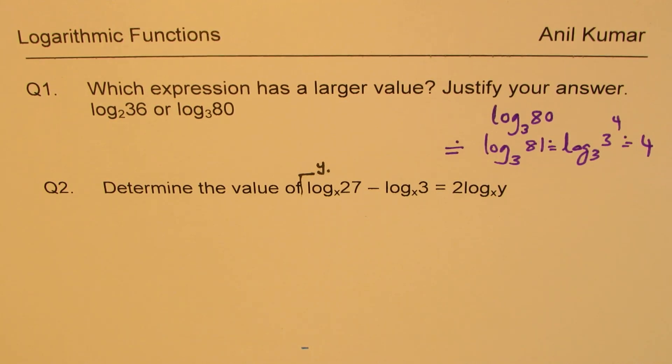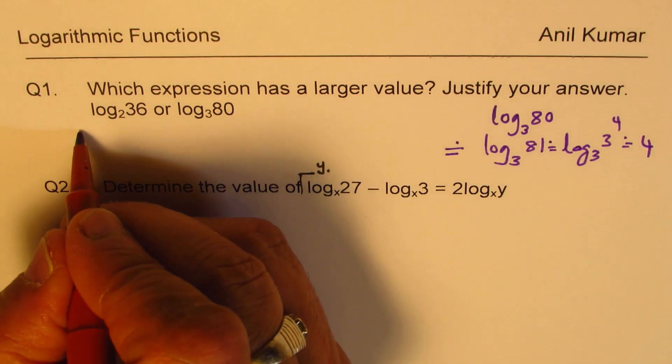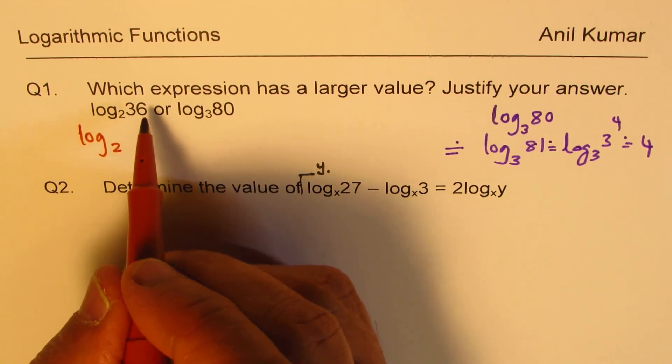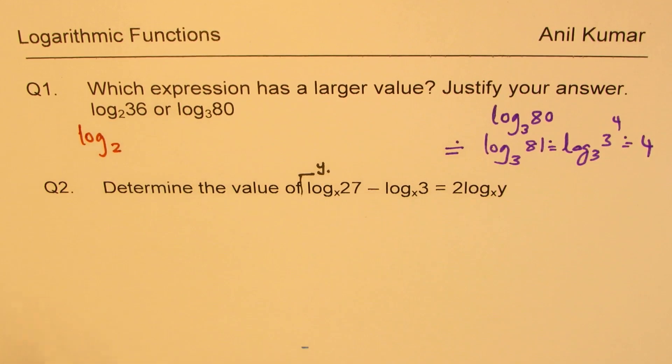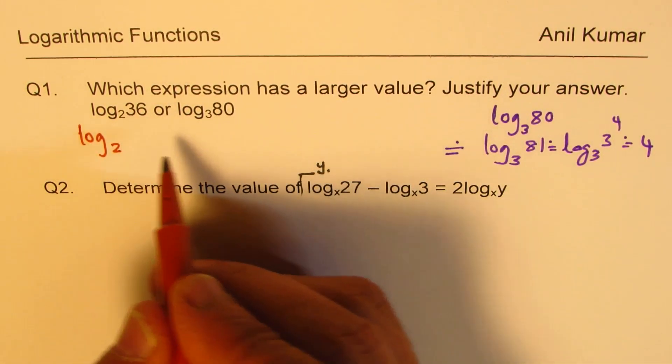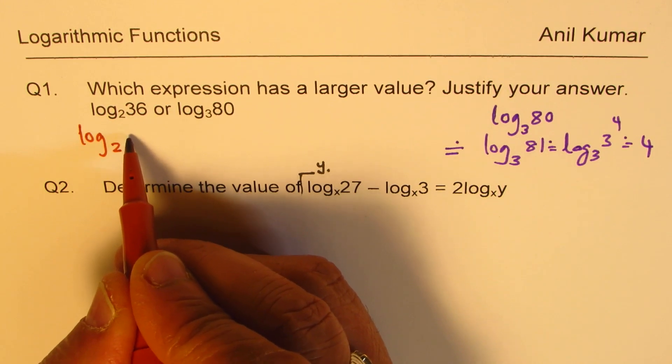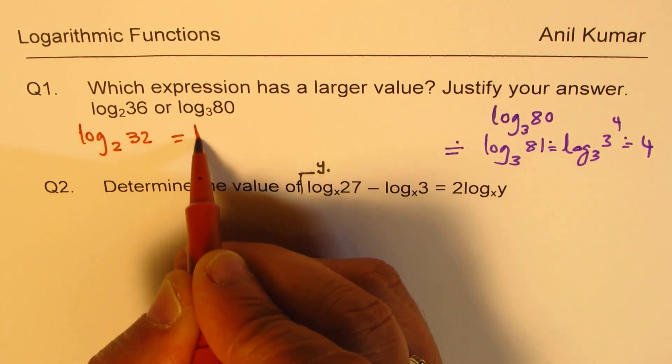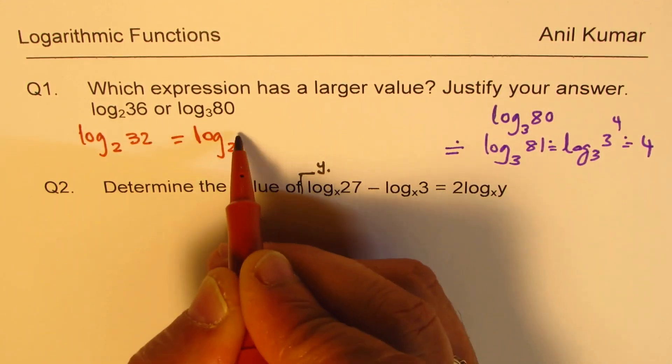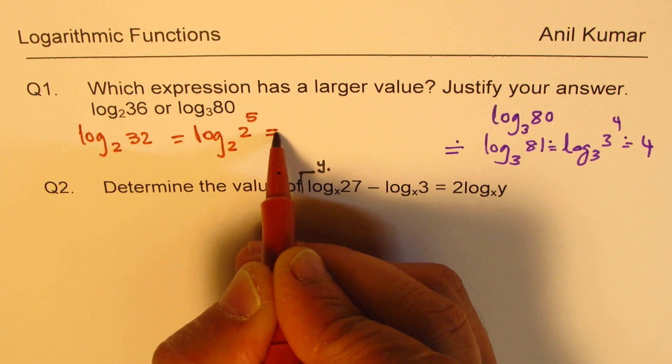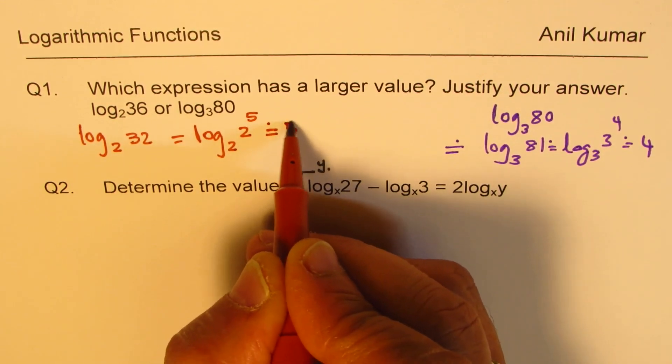On the other hand, we have log to the base 2 of 36. We can approximate this. This is more than 32. So even if I write this as 32, that means log to the base 2 of 2 to the power of 5. So this is actually around 5.